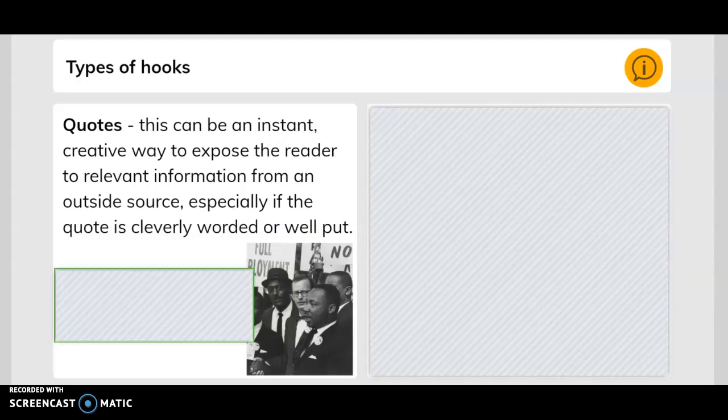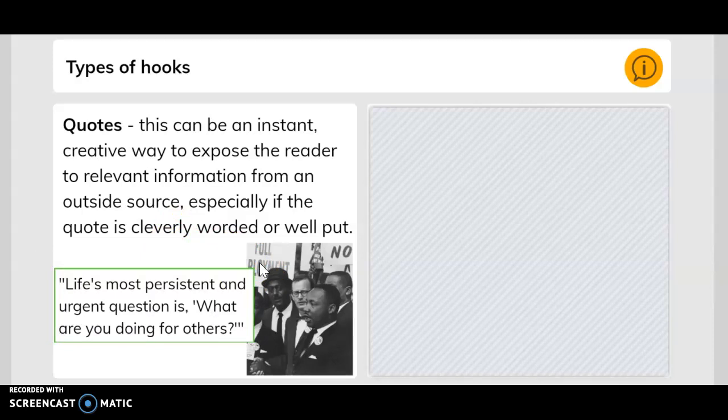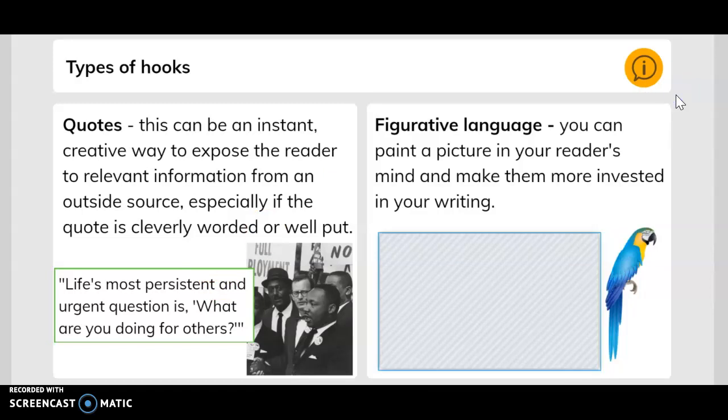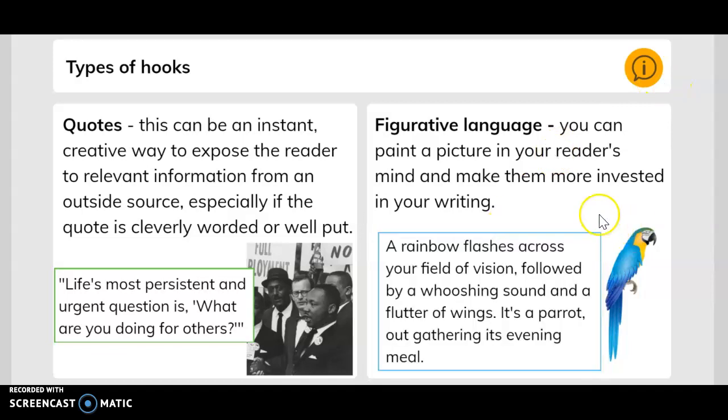Quotes - this can be an instant creative way to expose the reader to relevant information from an outside source, especially if the quote is clearly worded or well put. Life's most persistent and urgent question is what are you doing for others. Figurative language - you can paint a picture in your reader's mind and make them more invested in your writing. A rainbow flashes across your field of vision followed by a whooshing sound and a flutter of wings. It's a parrot out gathering its evening meal.